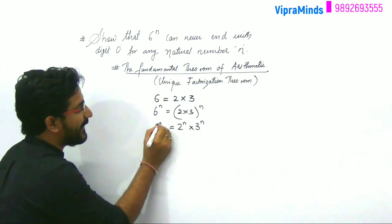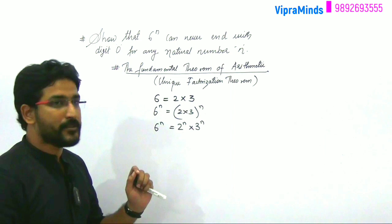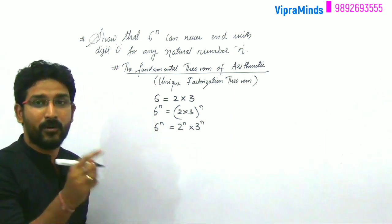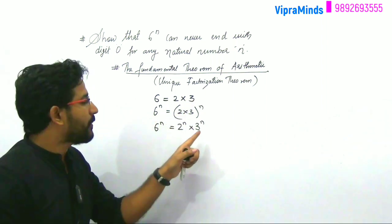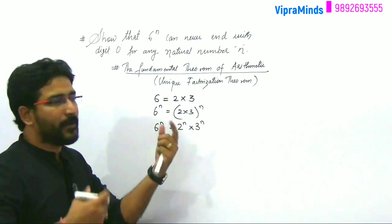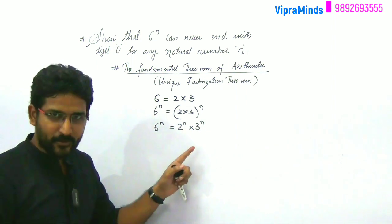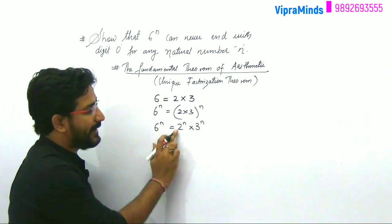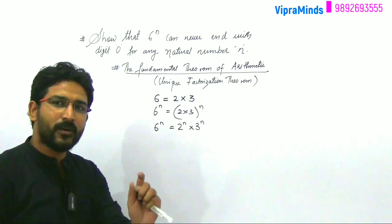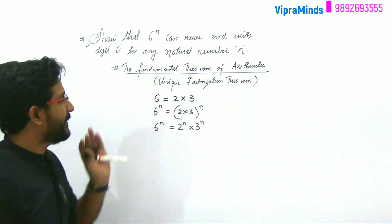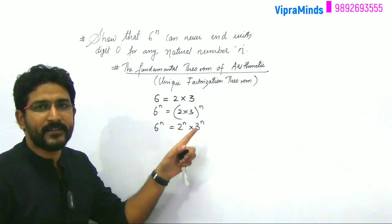So what does this mean? The factor of the base value — if 6 has factors 2 and 3, then 6 raised to n will always have factors 2 and 3, no matter what power you take. So 6 raised to n will contain the factors 2 raised to n and 3 raised to n. The factors always remain the same.